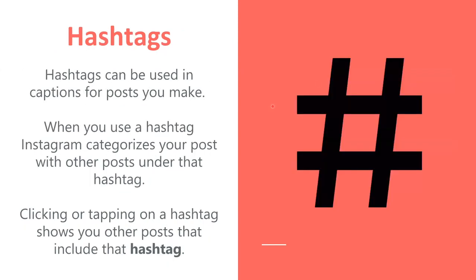Hashtags are how we really categorize posts on Instagram, and you can probably find that there's a hashtag for everything — there's even a hashtag for hashtag. They're used for categorizing content, and they're also used if you want to tag a specific group or topic.